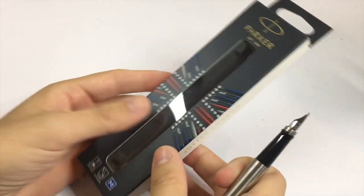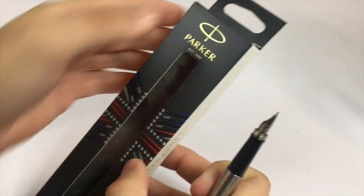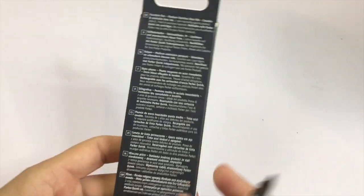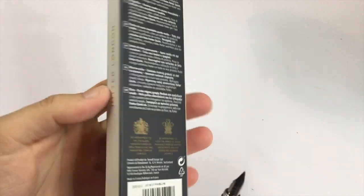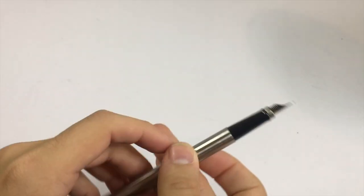It comes in this basic sort of cardboard box that sort of hangs on the shelf with all the information on the back, and it comes with one blue cartridge which is what is in the pen at the moment.